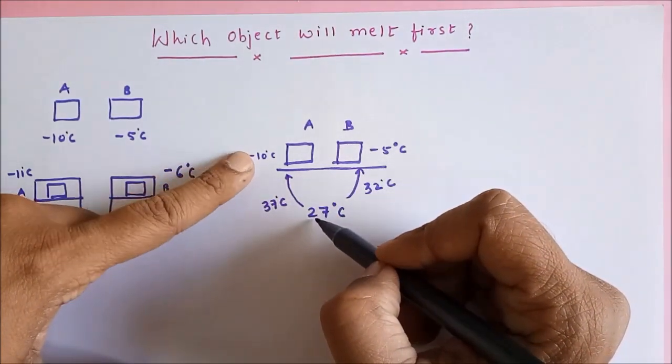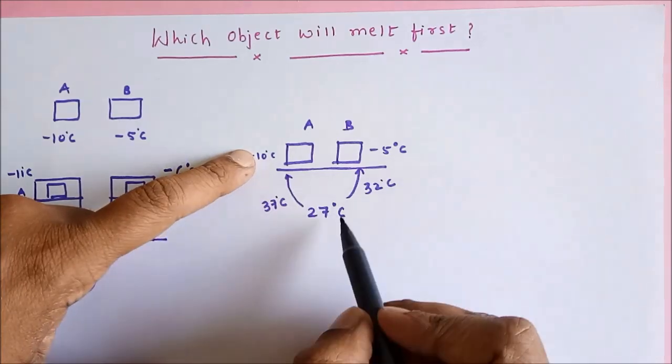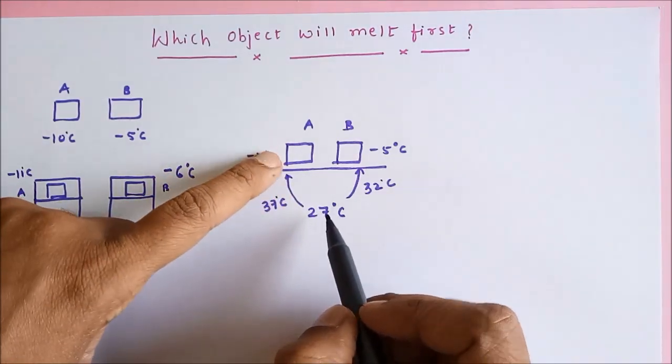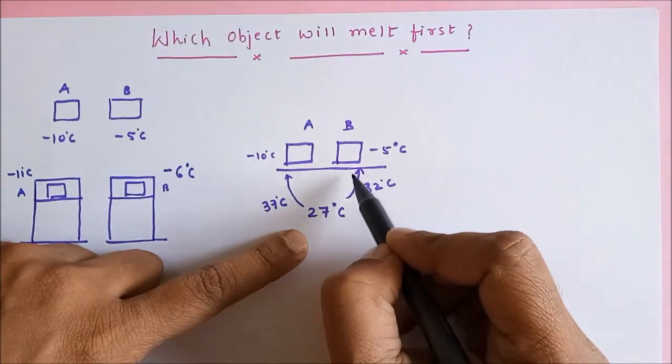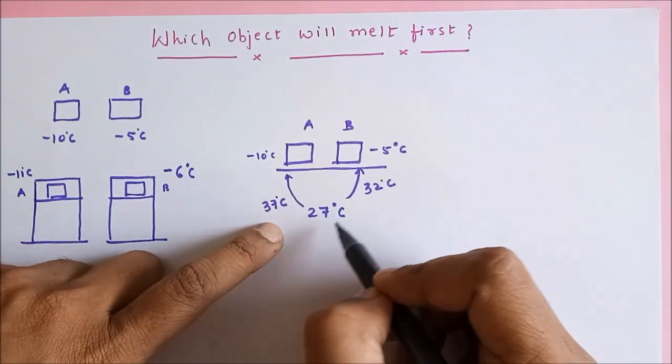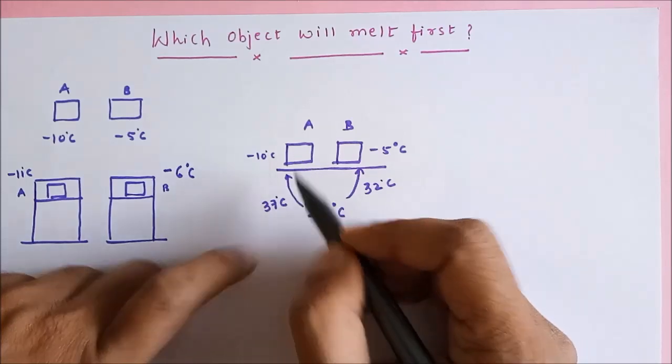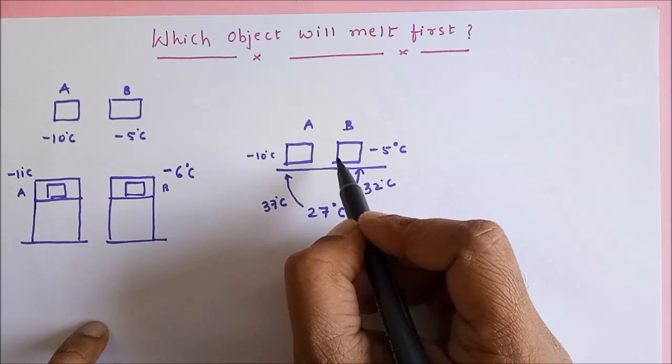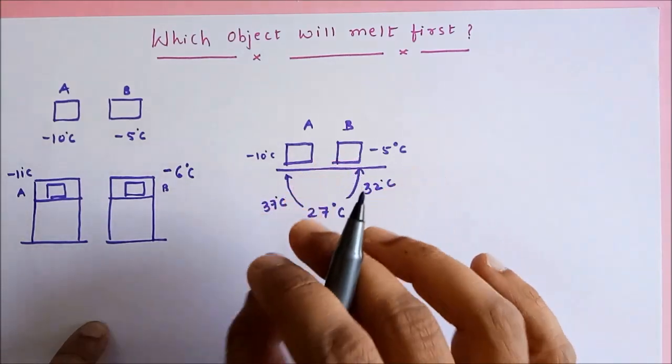You can see that the difference in temperature is larger. So heat energy always flows from high temperature to low temperature. From the atmosphere, the heat energy will go into B, and also from the atmosphere, the heat energy will go into A.